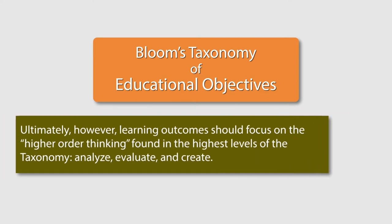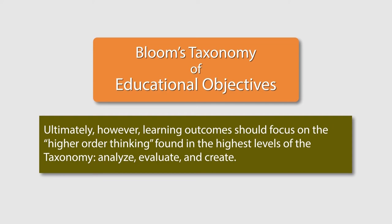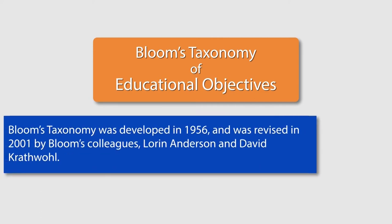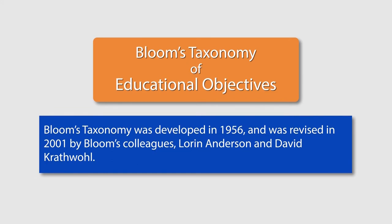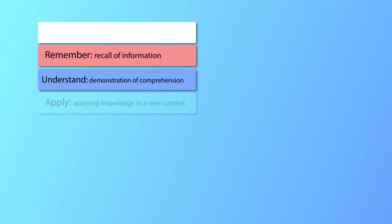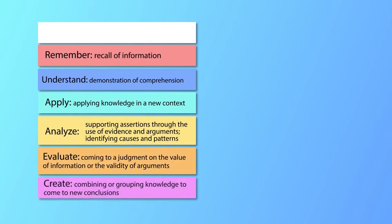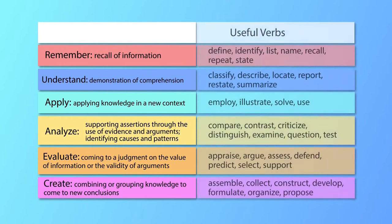Although Bloom's Taxonomy is a hierarchy, each type of learning can be a valuable aspect of a course. Ultimately, however, learning outcomes should focus on the higher-order thinking found in the highest levels of the taxonomy — that is, analyze, evaluate, and create. Bloom's Taxonomy was developed in 1956 and was revised in 2001 by Bloom's colleagues Lauren Anderson and David Kraftwall. The revised taxonomy includes: remember, understand, apply, analyze, evaluate, and create.